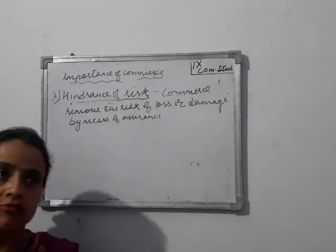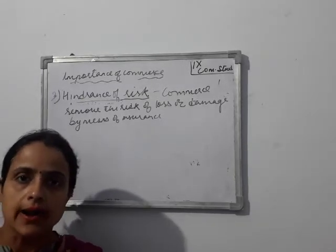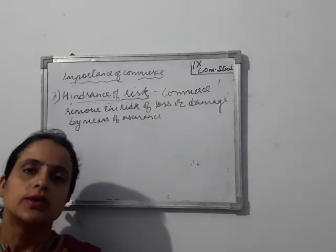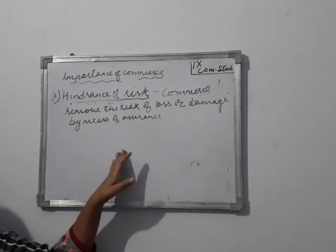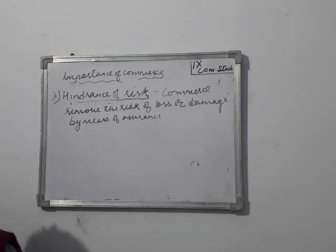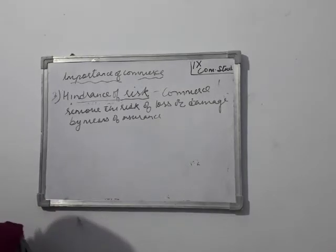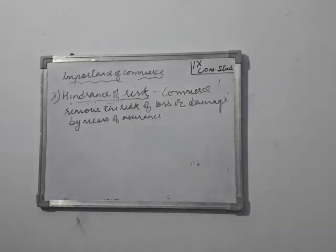When goods are sold, losses can be caused by a natural calamity. If there is a fire or any bad situation, it is going to be hard for the producers. So this is the case for producers to insure themselves through insurance. The fourth importance is hindrance of risk, which is removed by insurance, a part of commerce.